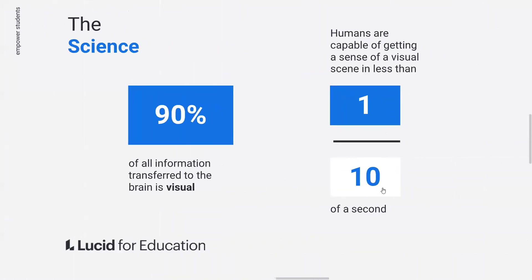Part of the reason is that 90% of all information transferred to the brain is visual. In fact, we're capable of getting the sense of a visual scene in less than one tenth of a second. Because the mind is designed to grasp visual input infinitely faster, visual learning is vital in the classroom. It allows students to organize and analyze complex information, identify patterns and relationships, and integrate new knowledge, all of which increases students' critical thinking and retention of learning.